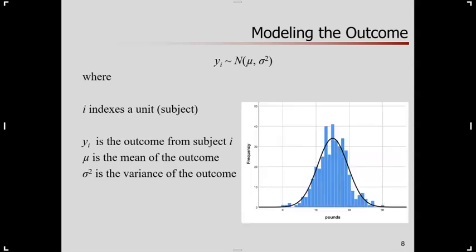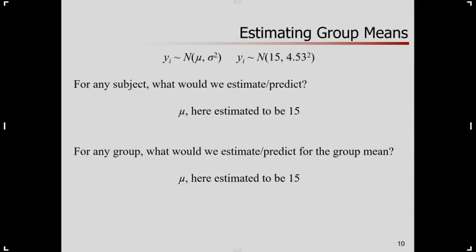Here it is for the data. There's a little histogram. Imposing a normal distribution looks reasonable to me. I can give you some summary statistics. Across the 386 people, the sample mean is 15. Sample standard deviation, four and a half or so.